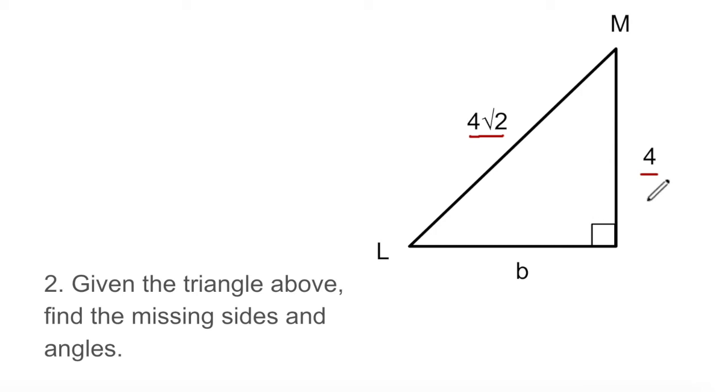So side B is going to be the same as this side over here, 4. It's 4. This side is 4. And then what are the two angles? Well, this is 45 degrees, and this is 45 degrees. So this was easy to solve because the ratio of these two sides was sufficient to tell us that this is a 45-45-90 triangle.